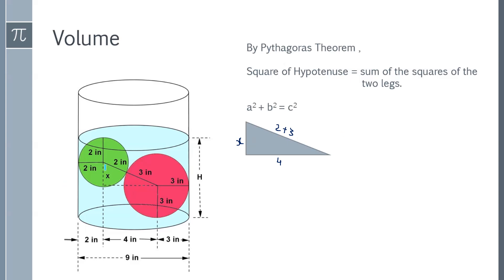And in this right triangle, this x is one of the legs and the other leg is this 4 inch. So, summation of these two legs squared is the hypotenuse squared. So, hypotenuse is the 2 inch plus 3 inch, which is 5 square.